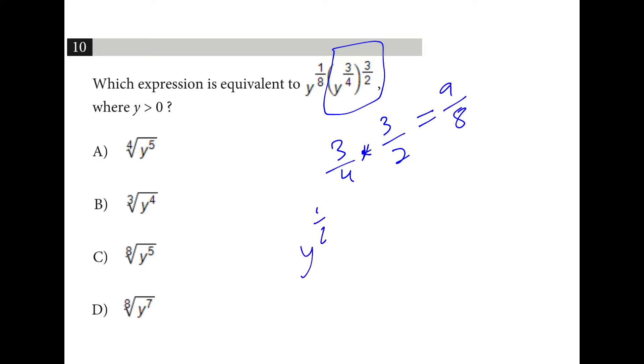Now if we have y to the 1 eighth multiplied by y to the 9 eighths, we can just add those, and we have y to the 10 eighths. We can simplify this as y to the power of 5 fourths, and then the denominator is always the root and the numerator is the power.